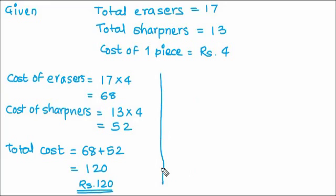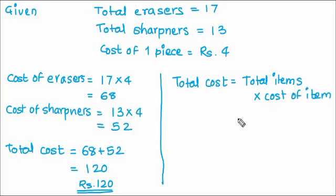Second way is because each of them cost Rs.4, it is a common cost. So, what we can do is total cost is equal to total items multiplied by cost of item. Because the cost of item is same in both cases, we can add the items before we multiply by the cost.